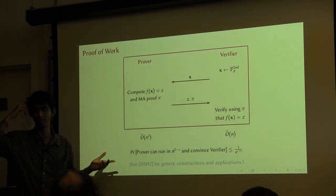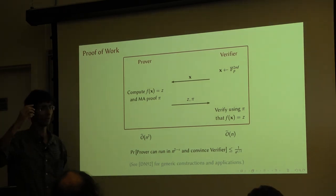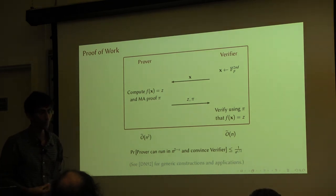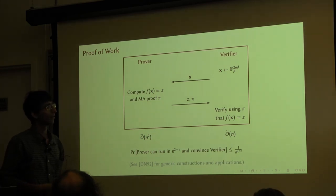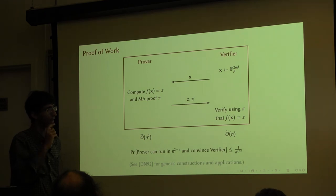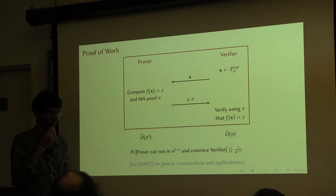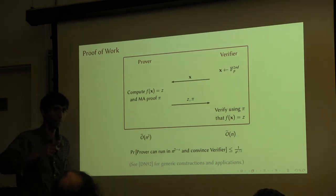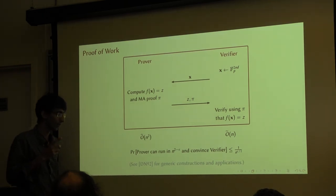Any questions about the proof of work? Is there a generic way of amplifying the prover's work so that you have greater variance between prover and verifier times — like composing f somehow so that you have quadratic growth in the prover's work but only linear growth in the verifier's work? I actually don't know a generic way to amplify that. But there are other things you can do.